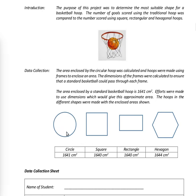Pi would come into play when calculating the area of the circle. As for the hexagon, you have to use some form of trigonometry — cut it into triangles: one, two, three, four, five, six triangles, calculate the area of one, and multiply it by six. You also need the angles within the hexagon.